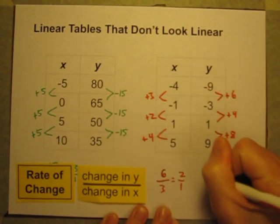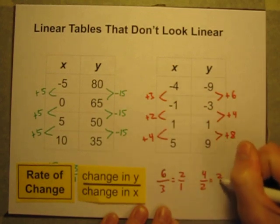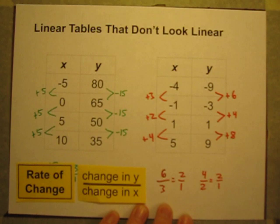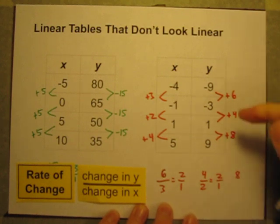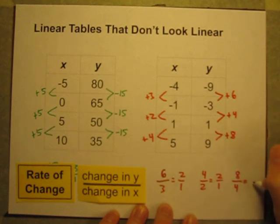How about here? 4 change in Y, 2 change in X, 4 divided by 2 is also 2 over 1. And down here, 8 and 4, change in Y of 8, change in X of 4, and 8 divided by 4 is 2 over 1.